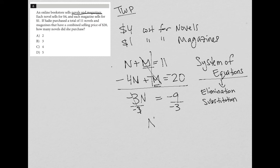What I'm left with is that N equals 3, which means there are three novels. And since the question is asking how many novels she purchased, that is the final answer.